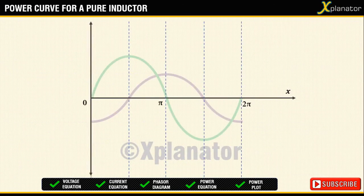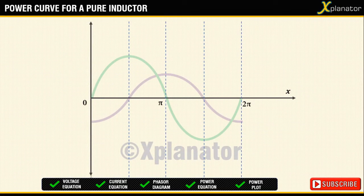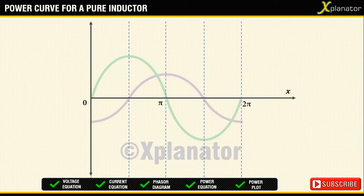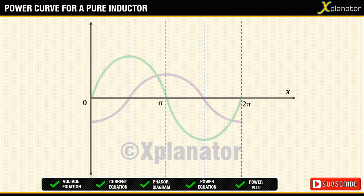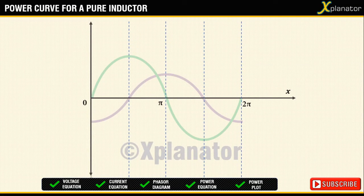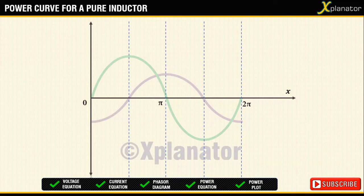Another approach to drawing this plot is first draw the voltage and current plot. And since power plot is a multiplication of voltage and current plot, multiply both the waves. Depending upon the polarity and magnitude of both the waves, you can obtain the resultant waveform.